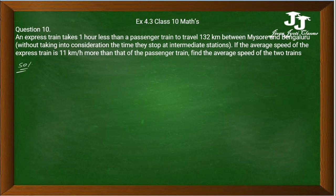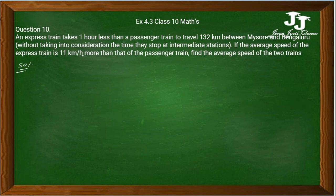An express train takes one hour less than a passenger train to travel 132 km between Mysore and Bangalore. If the average speed of the express train is 11 km per hour more than the passenger train, find the average speed of the two trains.